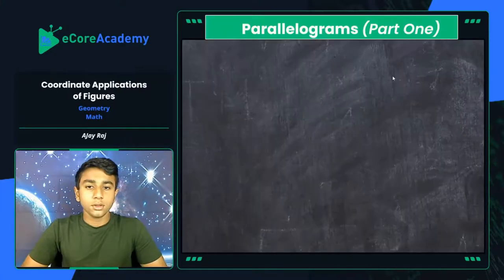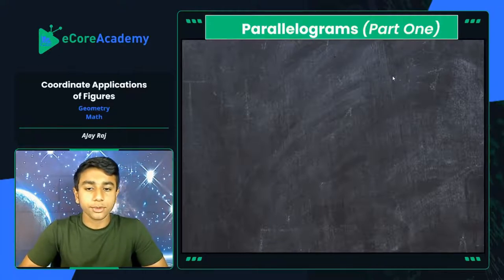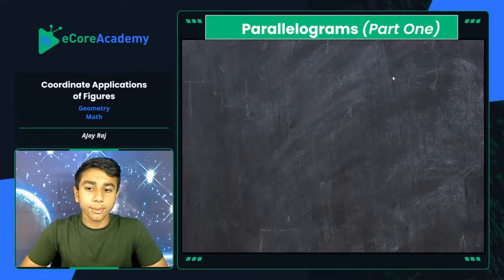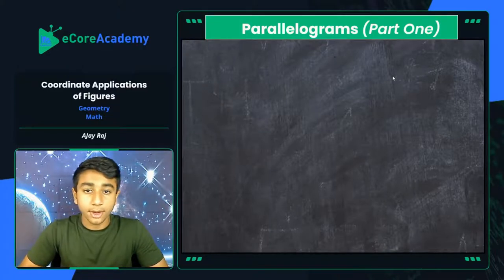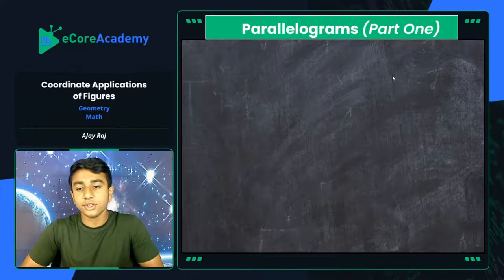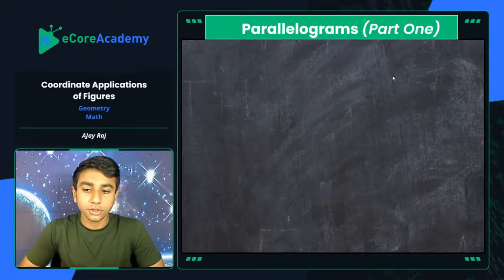Let's jump right into it. We're going to start by identifying some basic quadrilaterals, close out that chapter on quadrilaterals, cover their basic properties including area and perimeter formulas, then go over triangles. Finally, we're going to apply them in coordinate applications and do some practice problems with a new formula I'm going to give you.